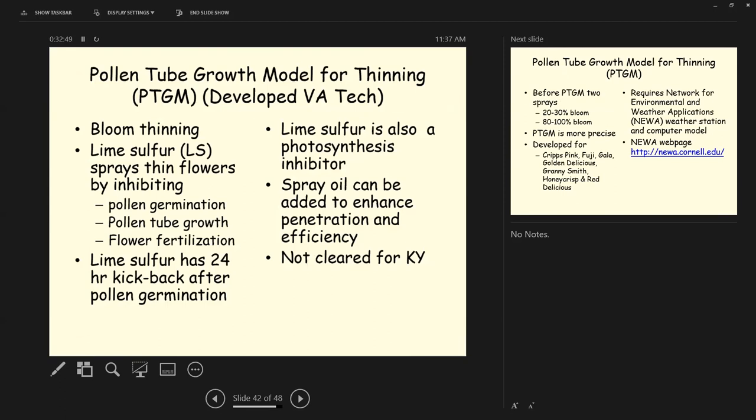There's also another model that I've just learned about recently that they've been working on for the past several years. This is bloom thinning. And they're using this a lot out on the west coast in these high density orchards. And they're starting to use it in Cornell and Pennsylvania and some of the Eastern orchards. It's using lime sulfur to thin the flowers by inhibiting pollen germination, pollen tube growth, and flower fertilization. So this is bloom thinning. We've still got in Kentucky, we've still got a lot of frost to worry about. Lime sulfur has a 24 hour kickback after pollen germination. So it gives you a little more application window. It's a little more effective than just what you knock out when you spray it. Lime sulfur is also a photosynthesis inhibitor. So it cuts down on carbohydrate production in the tree. And a lot of growers are adding spray oil to enhance the penetration and efficacy. The lime sulfur is not cleared in Kentucky for this use at this point.